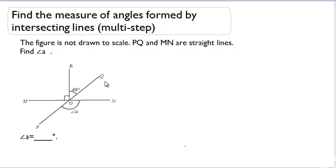We're going to find the measure of angles formed by intersecting lines. This problem is considered a multi-step problem because we're not simply looking for the vertical angles and able to figure out the angle measurements based off the vertical angles. Now we need to use a little bit more information.